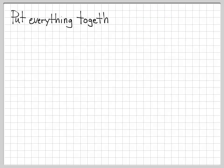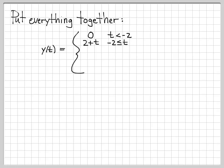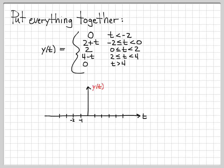Putting everything together in a piecewise equation: y(t) equals 0 for t < minus 2; equals 2 plus t for minus 2 ≤ t < 0; equals 2 for 0 ≤ t < 2; equals 4 minus t for 2 ≤ t < 4; and equals 0 for t ≥ 4. Plotting this, y(t) is 0 before minus 2, ramps up from 0 to 2 over the interval minus 2 to 0, holds constant at 2 until time 2, then ramps down to 0 at time 4, and is 0 for all time after.